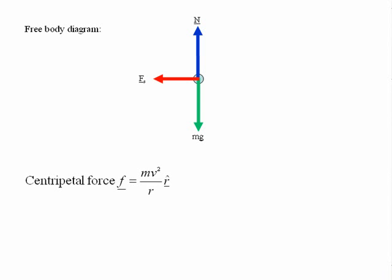The centripetal force necessary to make the car go around the bend is given here by the expression shown on the screen, Mv squared over R, and it's acting in the radial direction, so we have the unit vector R hat.